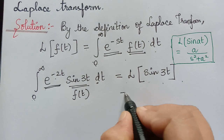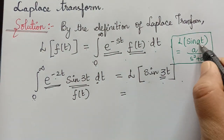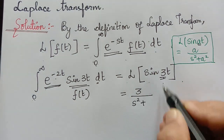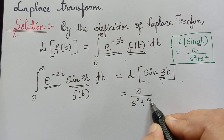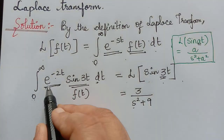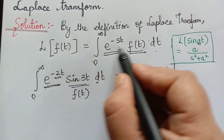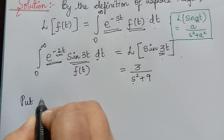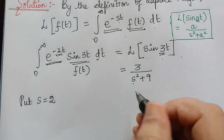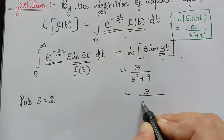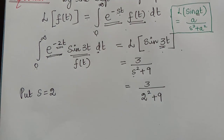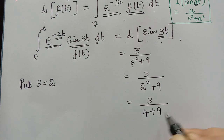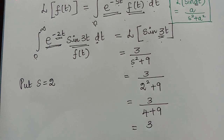The value of a here is 3, so we get 3 divided by s squared plus 3 squared, which is 9. Now the value of s, when we compare with this integral, is equal to 2. So we put s equal to 2 in our answer. This gives 3 divided by 2 squared plus 9, which is 3 divided by 4 plus 9, equal to 3 by 13.